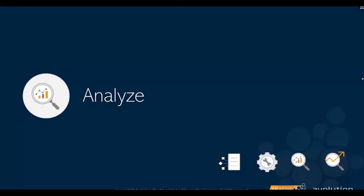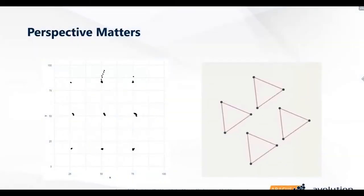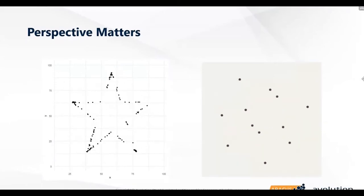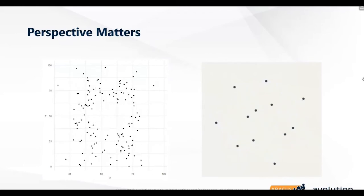We've captured the information and we're hopefully maintaining it. The next thing we need to do is analyse all of that data. As you've heard, that data doesn't really mean anything unless we actually build those information models and provide some kind of insight. A lot of that does come down to perspective. We have various data points floating around in an organisation, and the key thing is to build those data points into different perspectives.